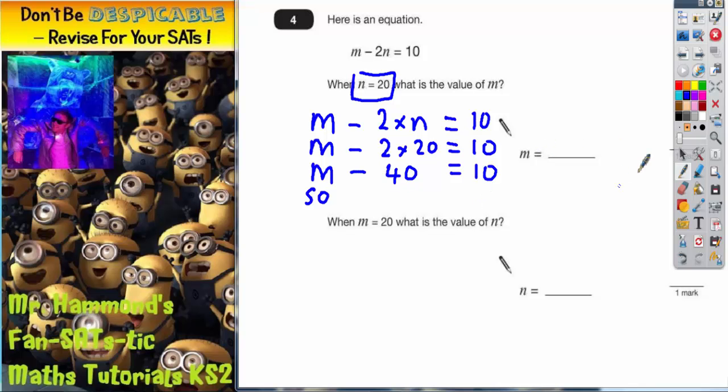If you can't spot that it's 50, then you can do yourself a little flow diagram. So mystery number is m. We're taking away 40 and out pops 10. To get back to the mystery number we need to reverse it. We need to go backwards, and when we go backwards we do the opposite.